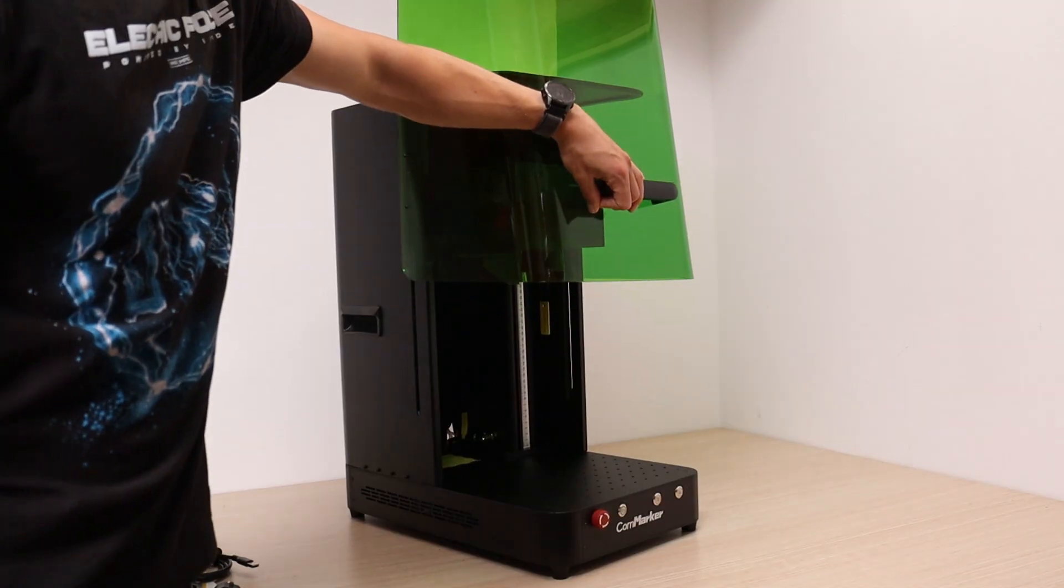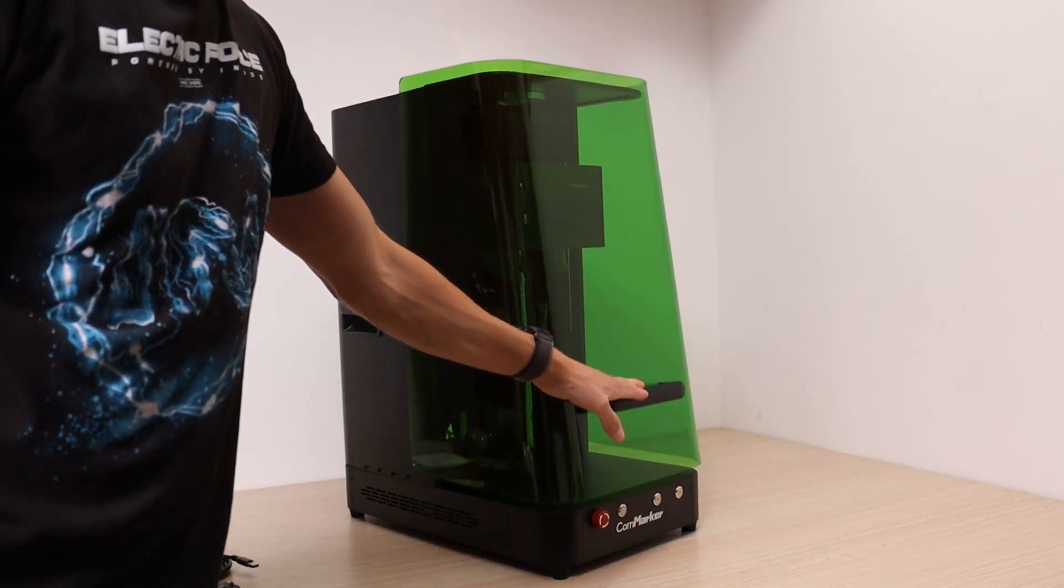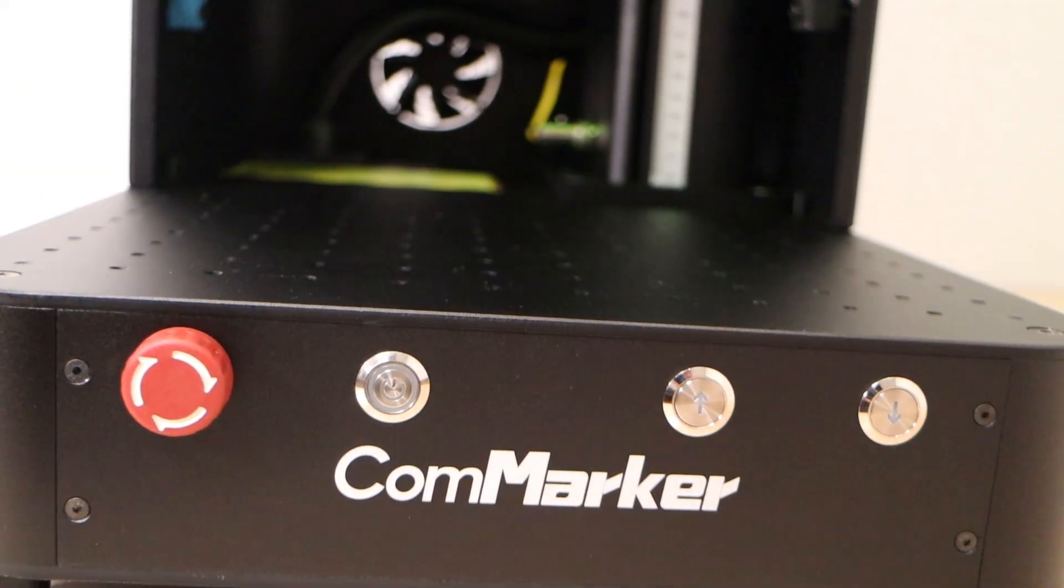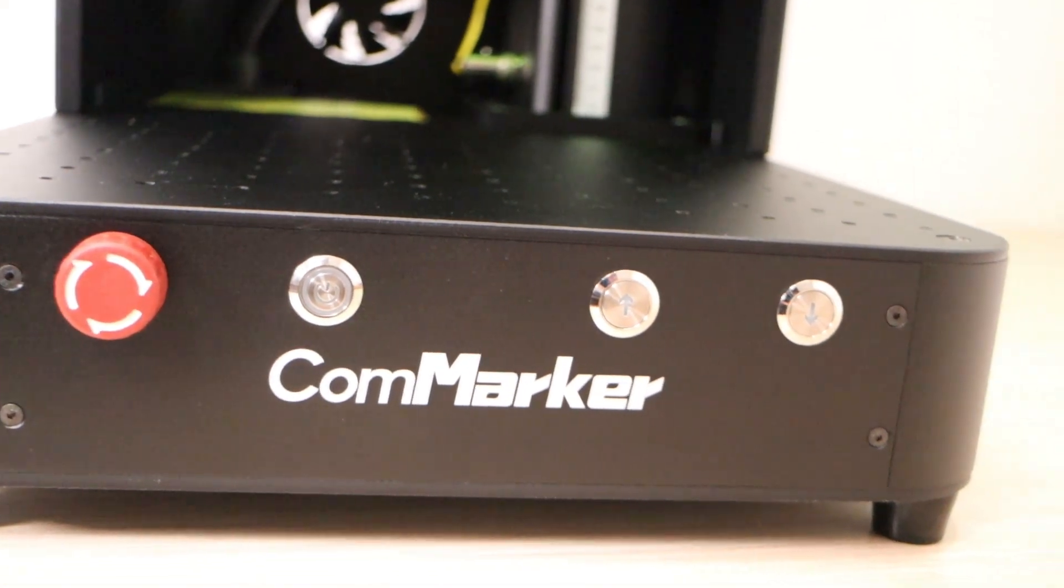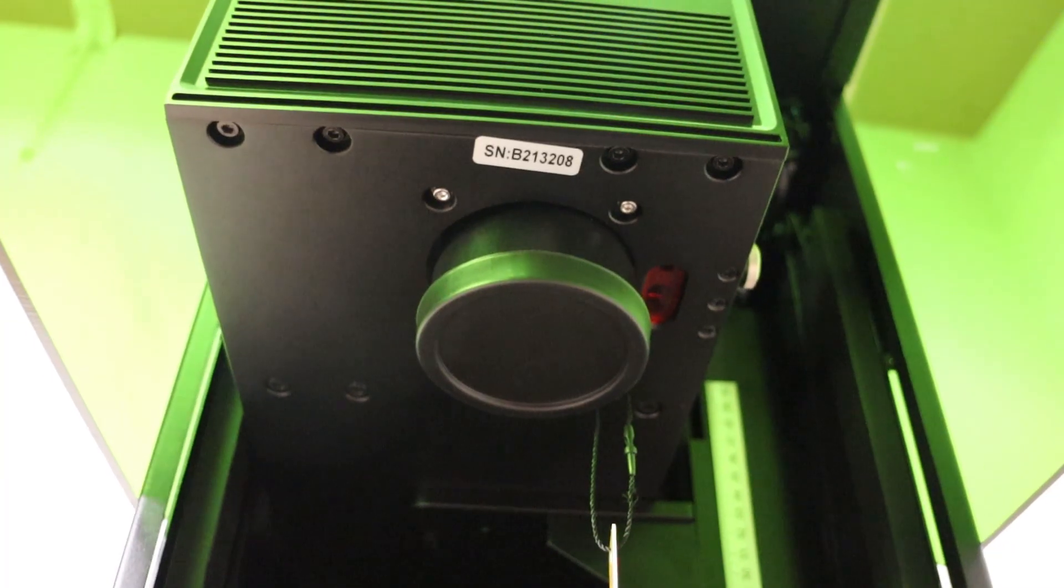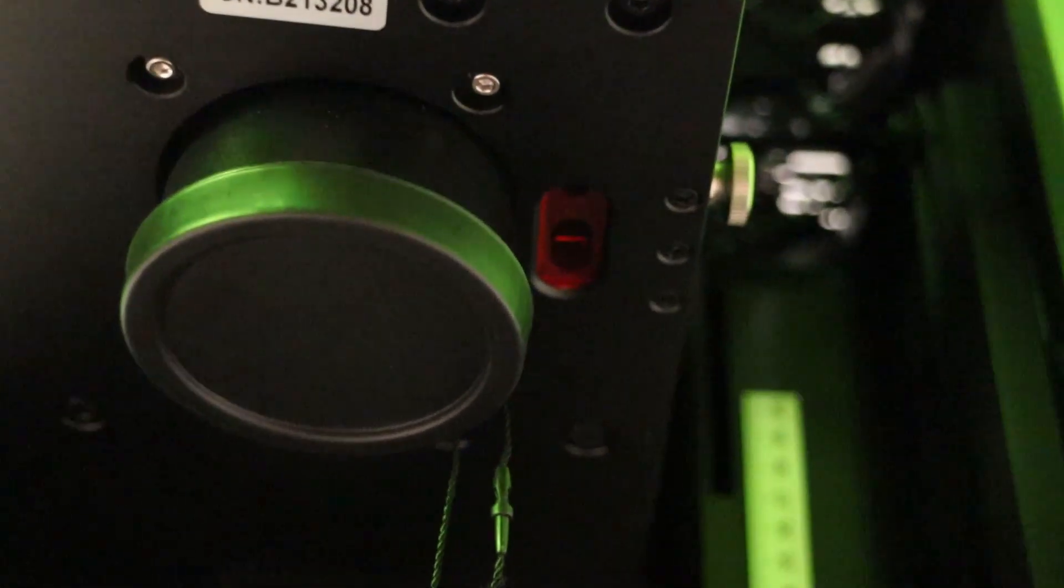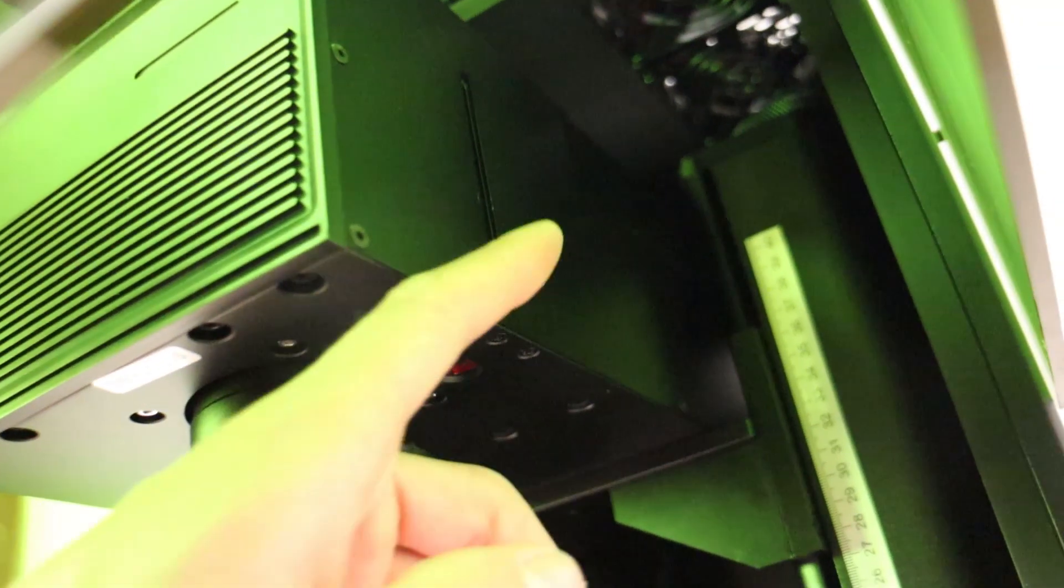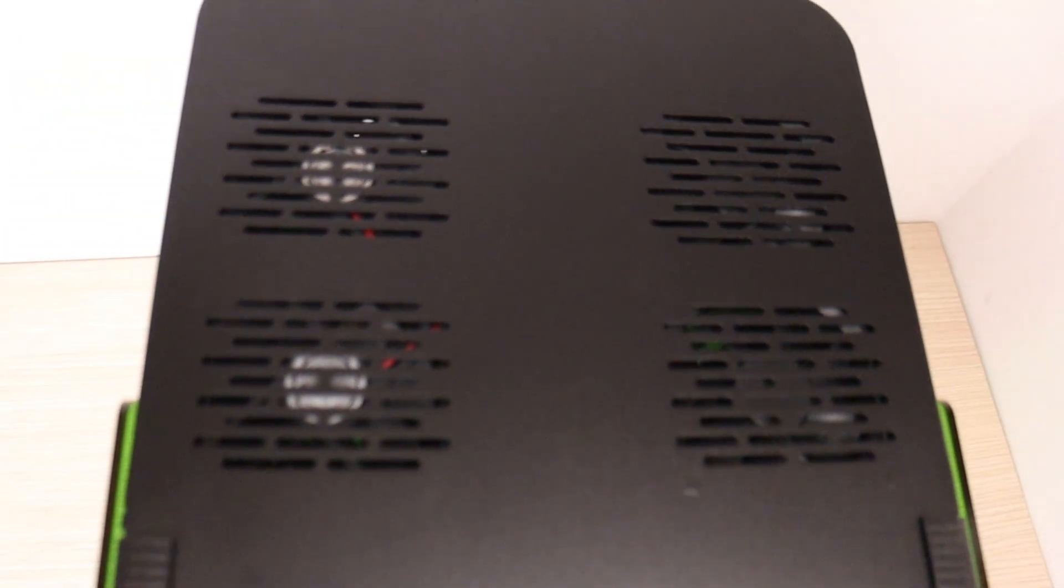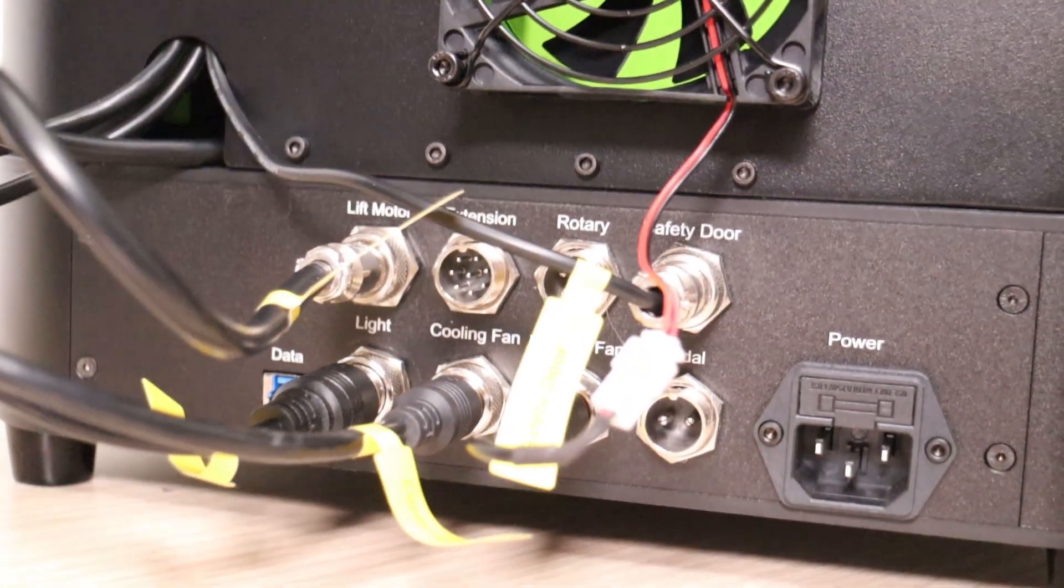The machine itself is really nicely built. The light shield slides smoothly on rails so you can position it wherever you like, and the front panel gives you all the essentials: an emergency stop button, the main power switch, and controls for adjusting the Z-axis. Inside, you'll find an air-cooled laser source and a distance sensor for autofocus, which you can tweak manually with a little thumb screw on the side. Up top, there are four exhaust fans to keep everything cool, and on the back you've got all your ports and another fan for airflow.